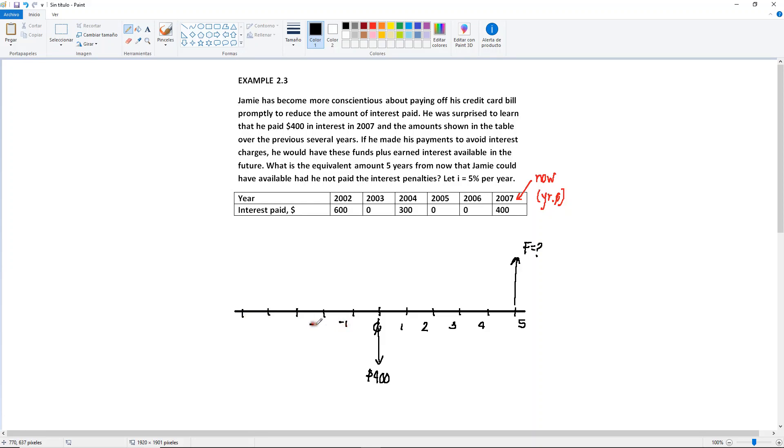So it's going to be year minus one, minus two, minus three, minus four, and minus five, according to the timeline. So we have 2007, nothing in 2006, nothing in 2005. In 2004, Jamie had to pay $300. So let's make the arrow a little bit shorter. And then, nothing in 2003, but in 2002, Jamie had to pay $600. A little bit longer than the $400.